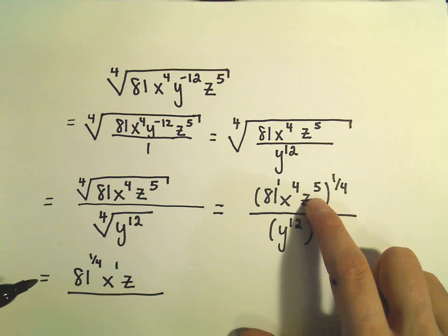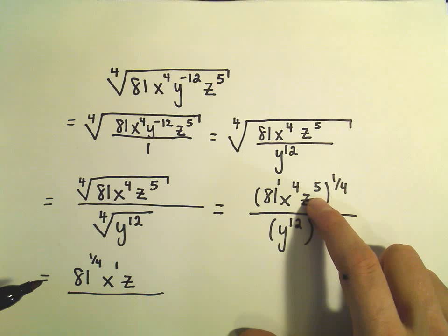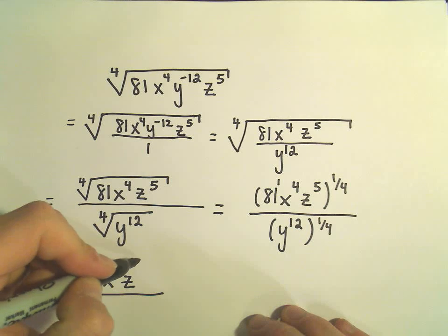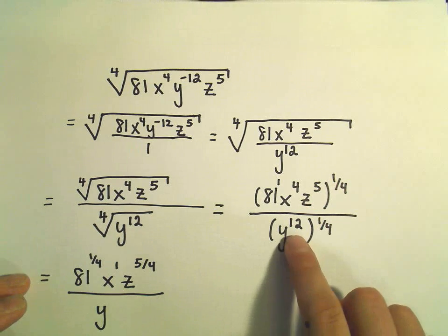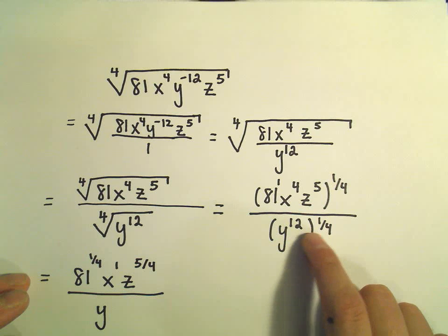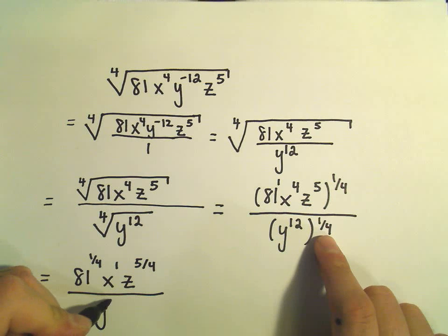And then my z, you can think about that as being five over one. So five over one times one-fourth would be five-fourths. And in the denominator, I have y to the twelfth raised to the one-fourth, twelve times one-fourth would give us twelve-fourths or three.